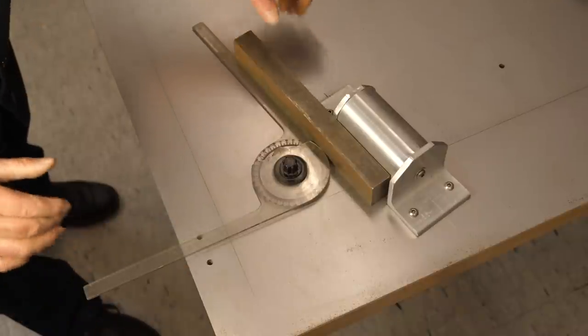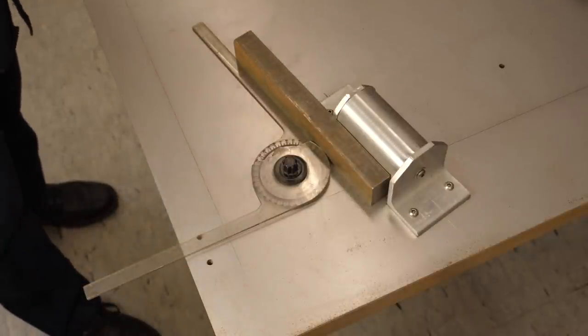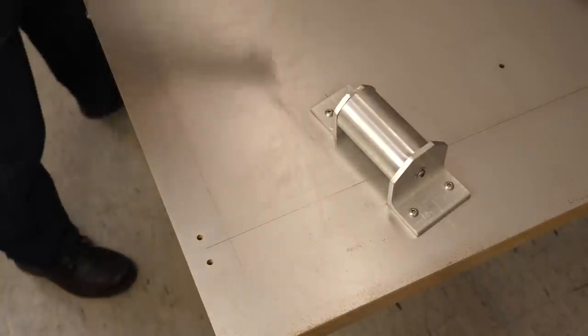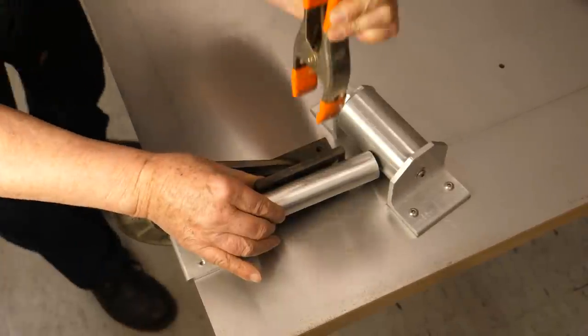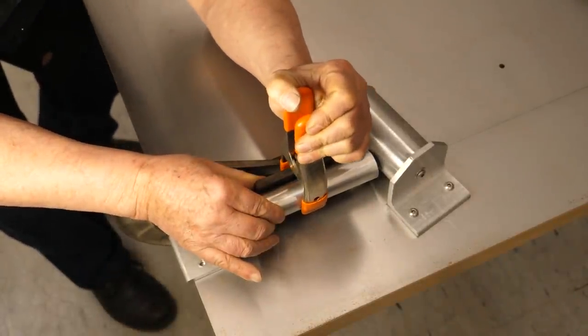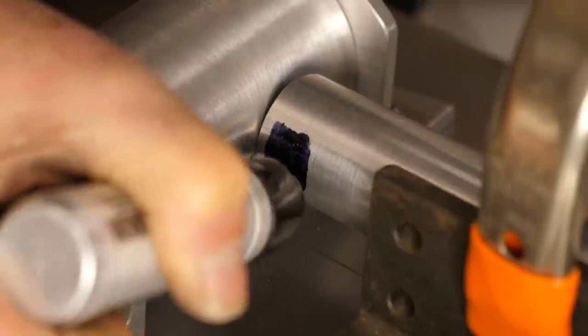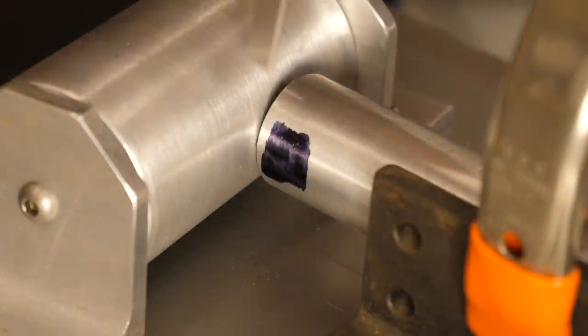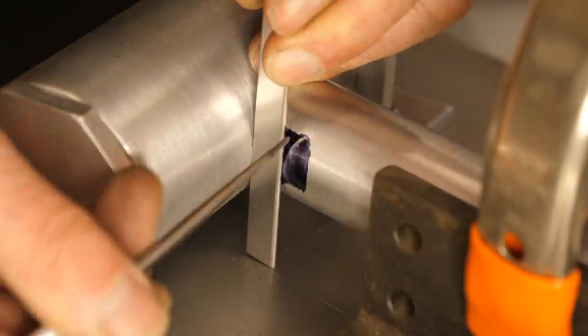The seat tube needs to be notched at a 12 degree angle where it meets the housing for the rear shock. I'm using a strip of metal to mark the location of the notch.